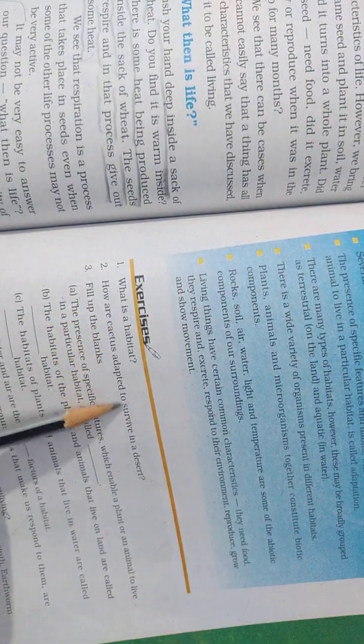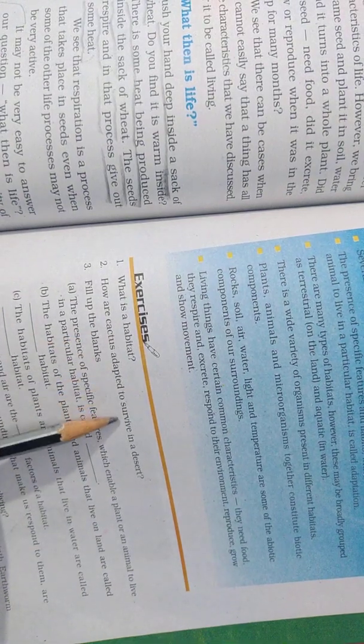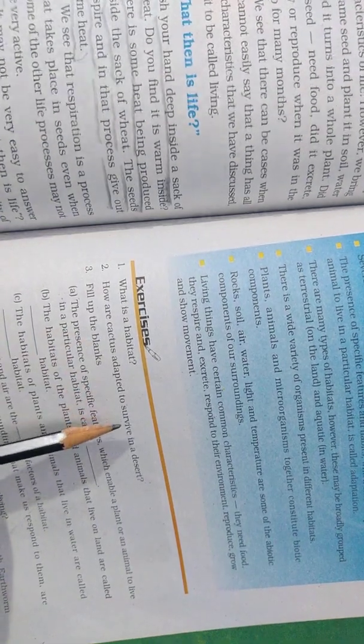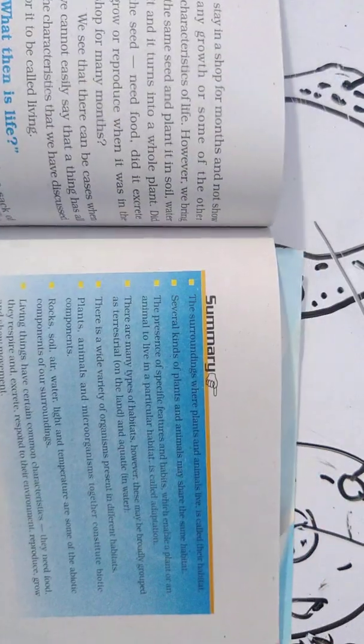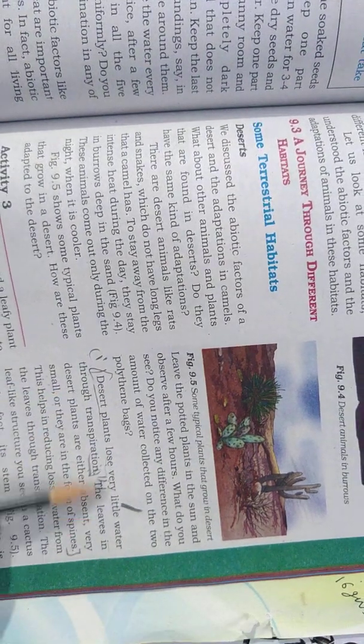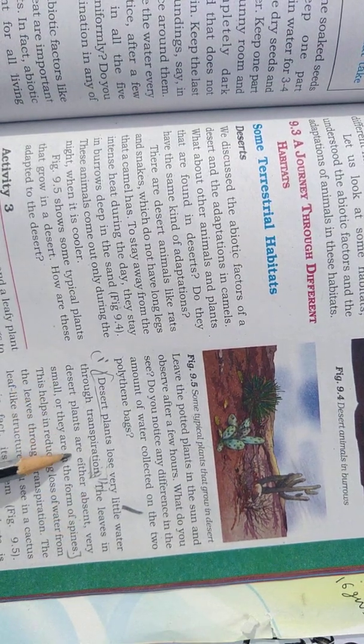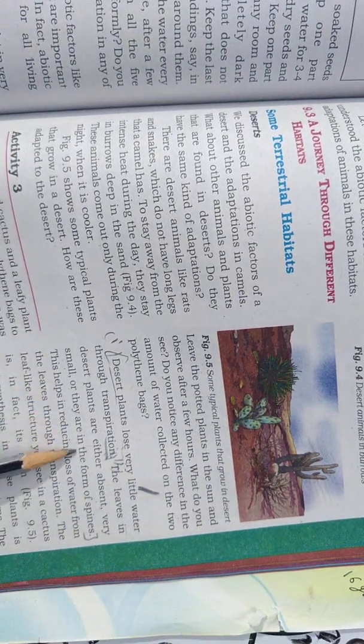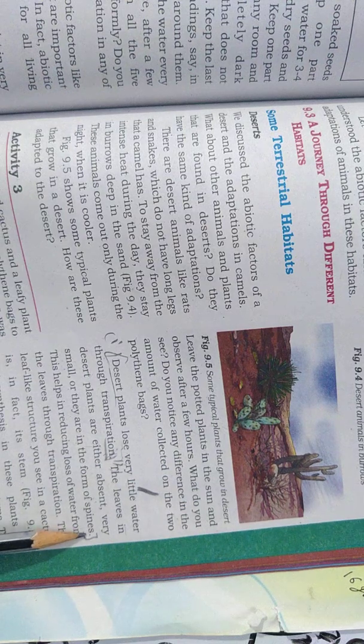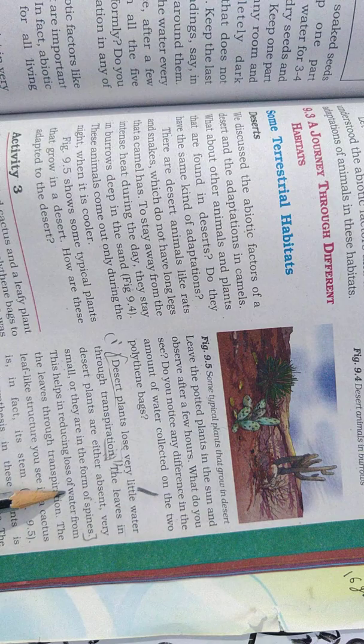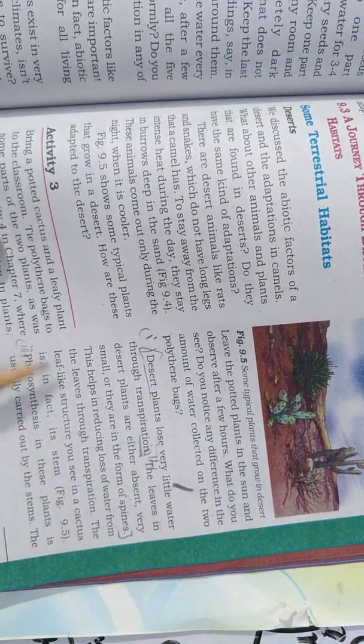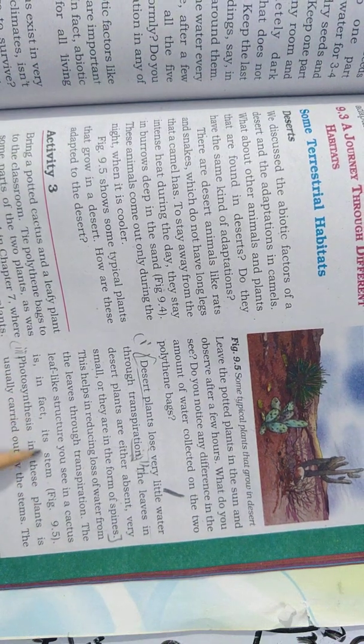Next question is how is cactus adapted to survive in desert? Cactus have some features in its body which enables it to survive in the desert. The roots of the cactus are very deep. Desert plants lose very little water through transpiration and the leaves of desert plant are either absent or very small or they are in the form of spines so that they can lose very little amount of water.